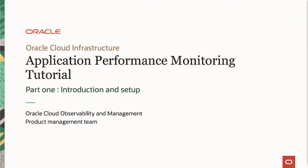Welcome to the Oracle APM tutorial series. Application Performance Monitoring is a service in Oracle Cloud Infrastructure that provides a set of solutions including distributed tracing, real user monitoring, and synthetic monitoring. This recording covers introduction and setup, which is part one of the tutorial. My name is Yutaka Takatsu, and I am one of the product managers in the Observability and Management product management team in Oracle Cloud Infrastructure.